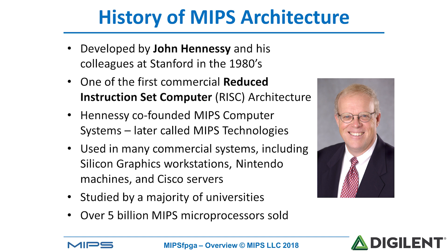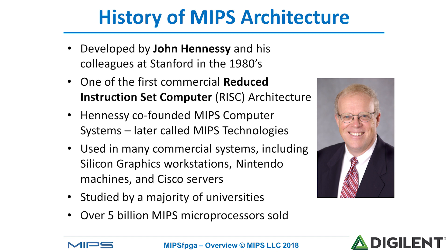MIPS has been used in many commercial systems including Silicon Graphics workstations, Nintendo machines, and Cisco servers, and has been studied by a majority of universities. There have been over 5 billion MIPS microprocessors sold. Historically, some of the MIPS processors include the MIPS R3000, R4000, and R10000, used in the 1980s and 1990s — for example, in Silicon Graphics workstations.